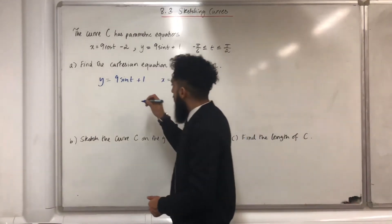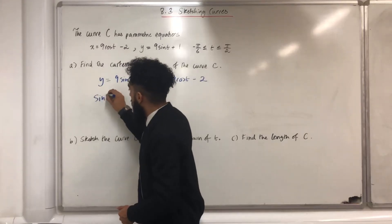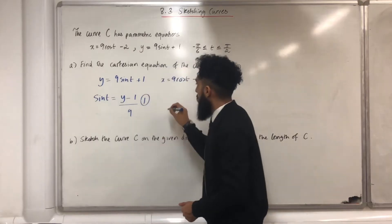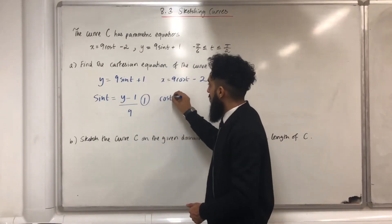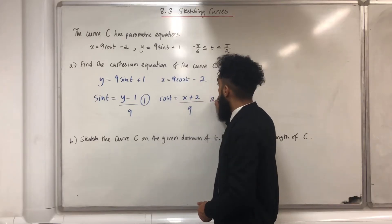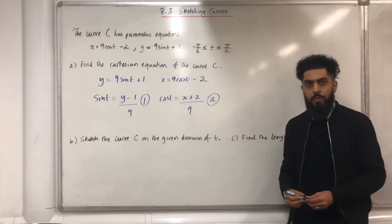So if I do this, I obtain the following result. Sin t is equal to y minus 1 all over 9. I call this equation 1. Cos t is equal to x plus 2 all over 9. I call this equation 2.